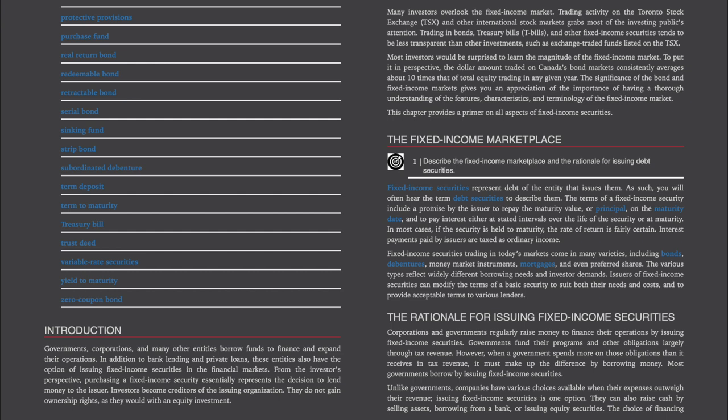Many investors overlook the fixed income market. Trading activity on the Toronto Stock Exchange (TSX) and other international stock markets grabs most of the investing public's attention. Trading in bonds, treasury bills or T-bills, and other fixed income securities tends to be less transparent than exchange-traded funds listed on the TSX. Most investors would be surprised to learn the magnitude of the fixed income market — the dollar amount traded on Canada's bond markets consistently averages about 10 times that of total equity trading in any given year.